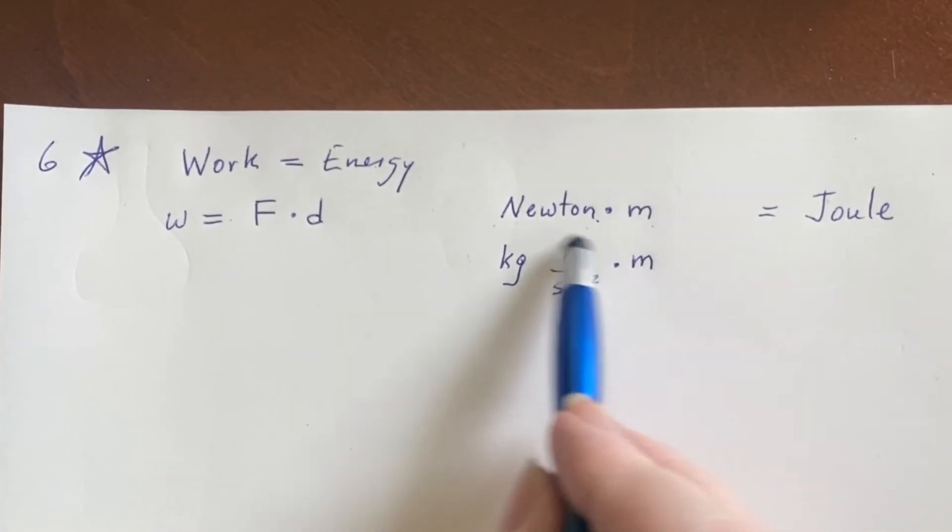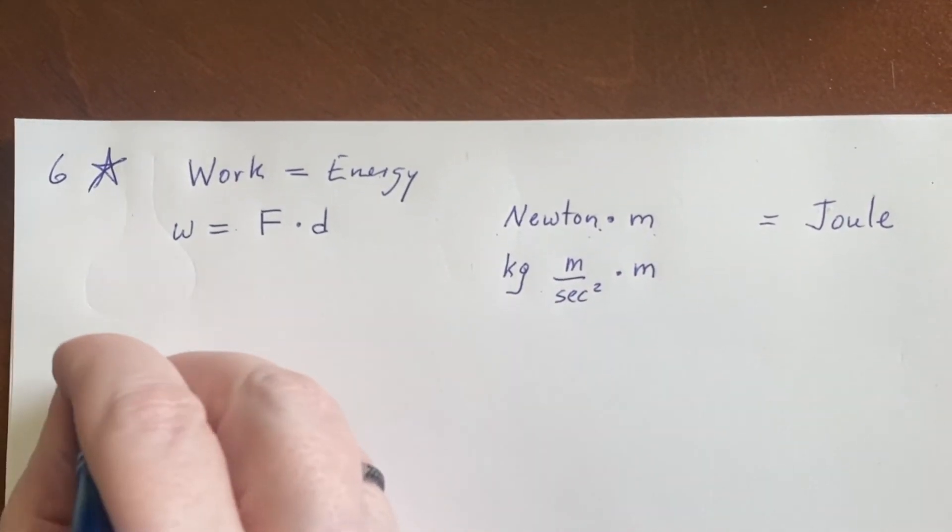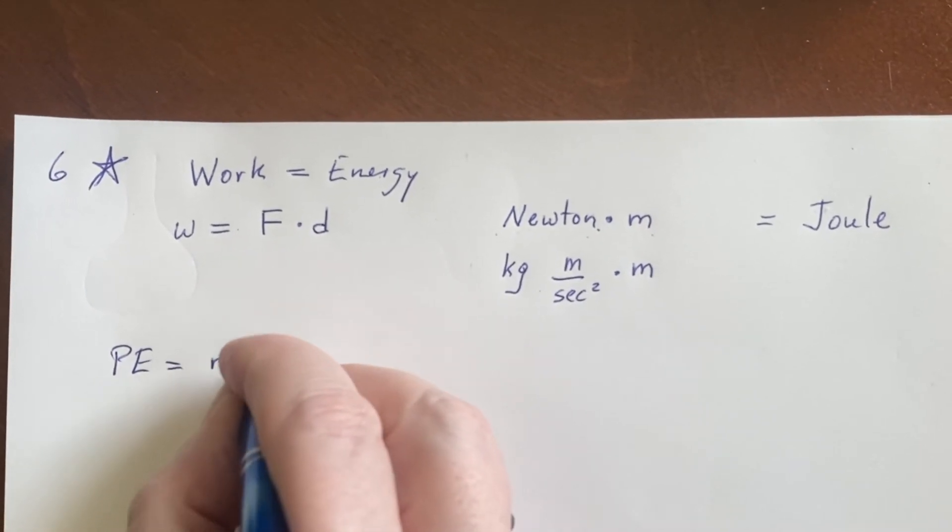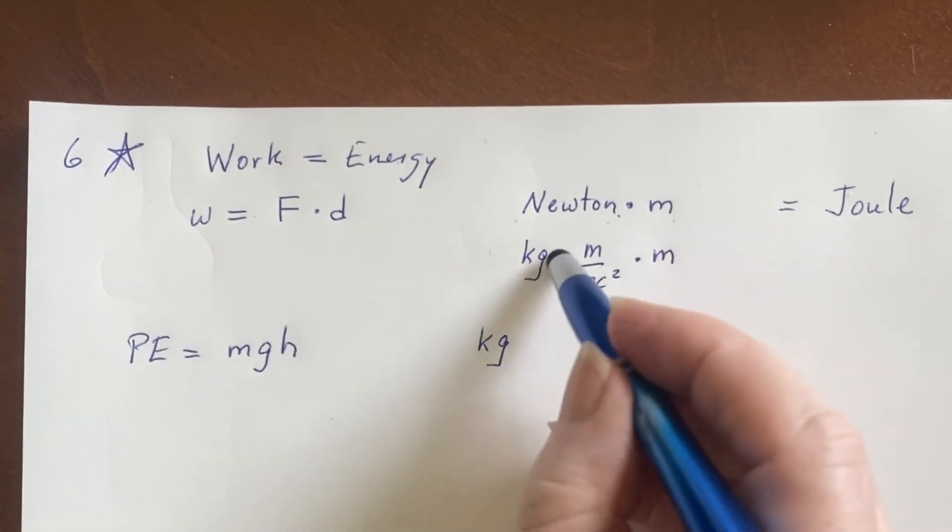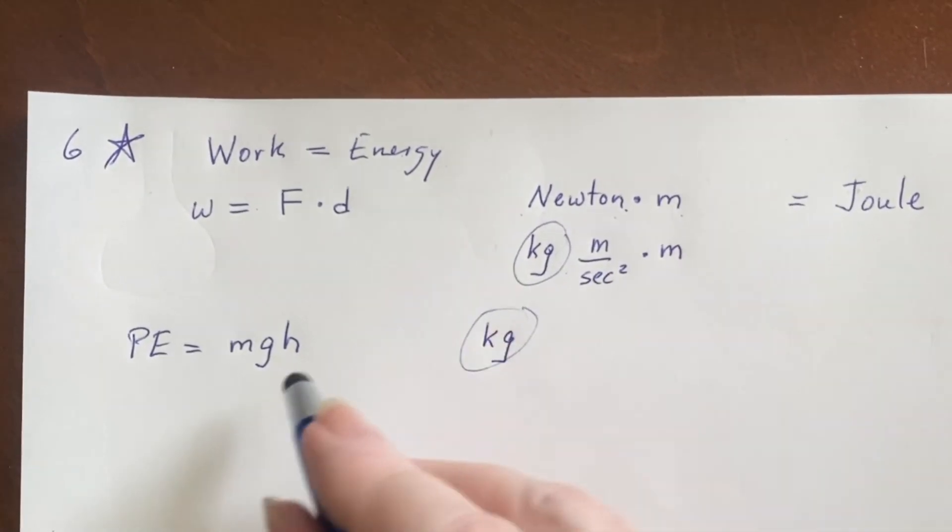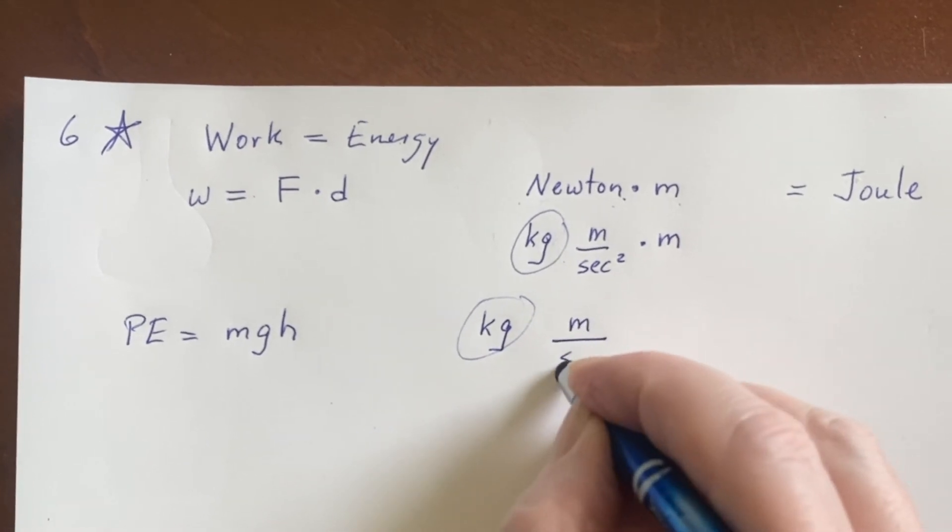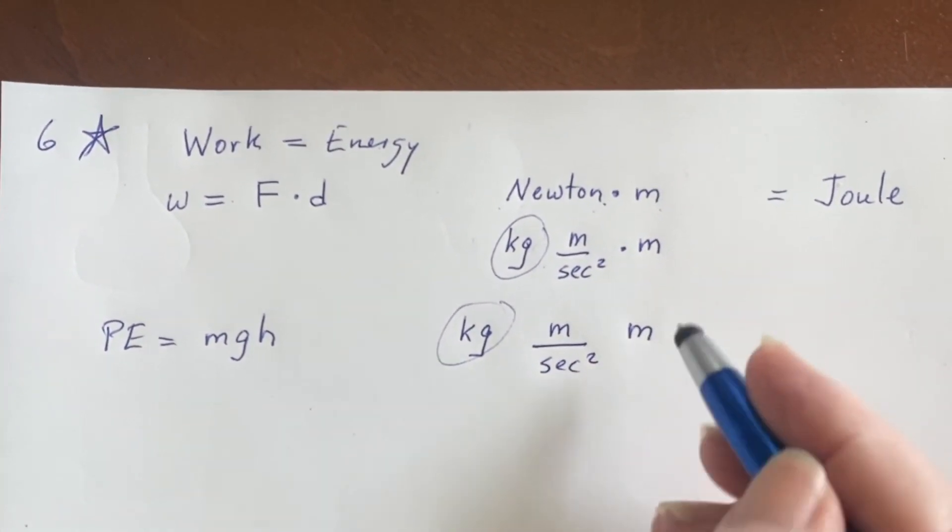Now here's the thing, you can rearrange these a little bit. Let's talk about potential energy. That had a formula m g h. Well that was a mass, okay there's the kilogram. Mass, gravity - oh that's an acceleration so that's meter per second squared. And then a height expressed in meters.